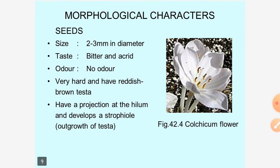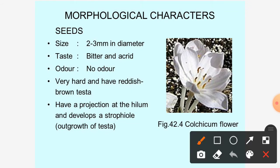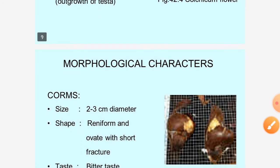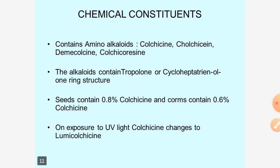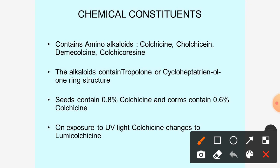Looking at only the seed morphological characters: the seeds are about 2 to 3 millimeters in diameter, taste is bitter and acrid, odor is not particular, very hard with a reddish-brown testa. They have a projection at the hilum and develop strophioles.